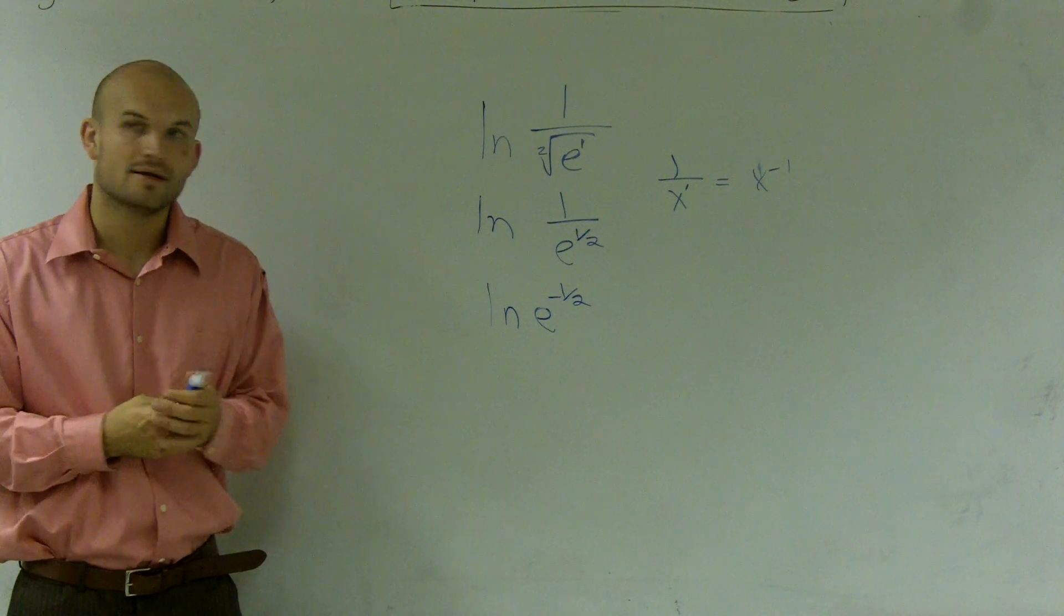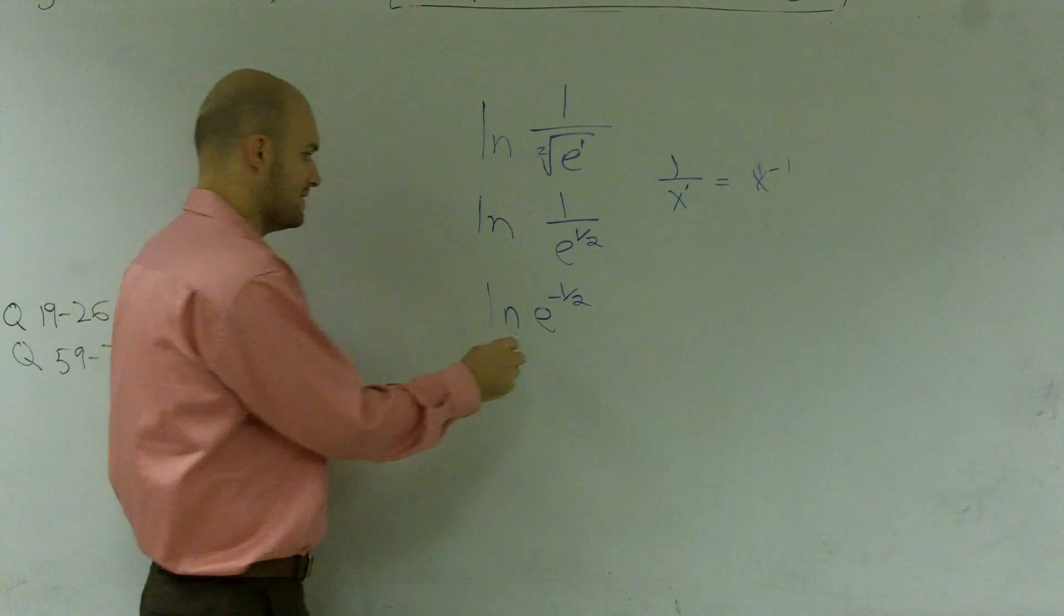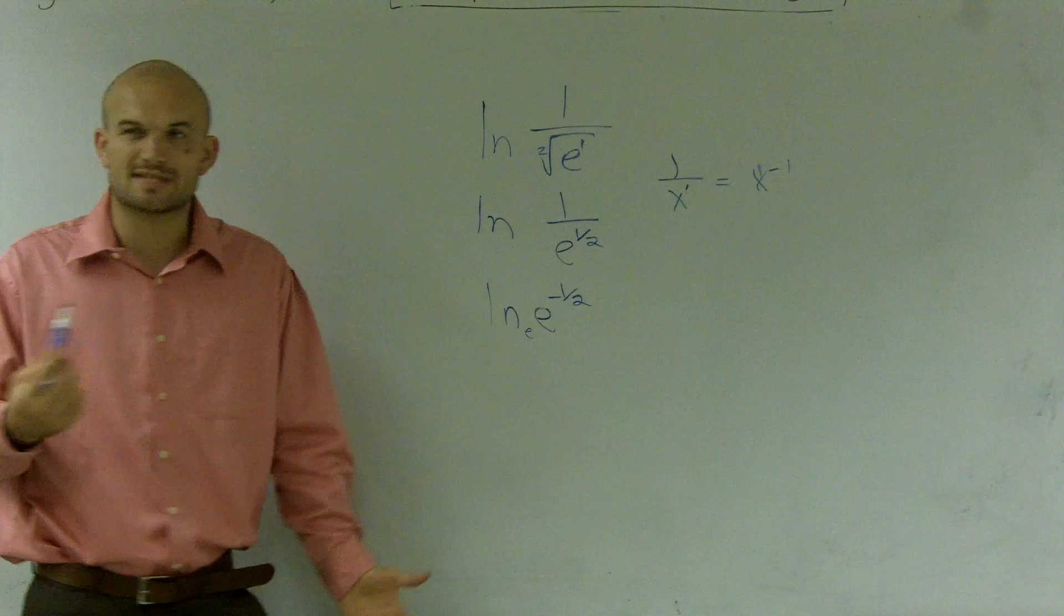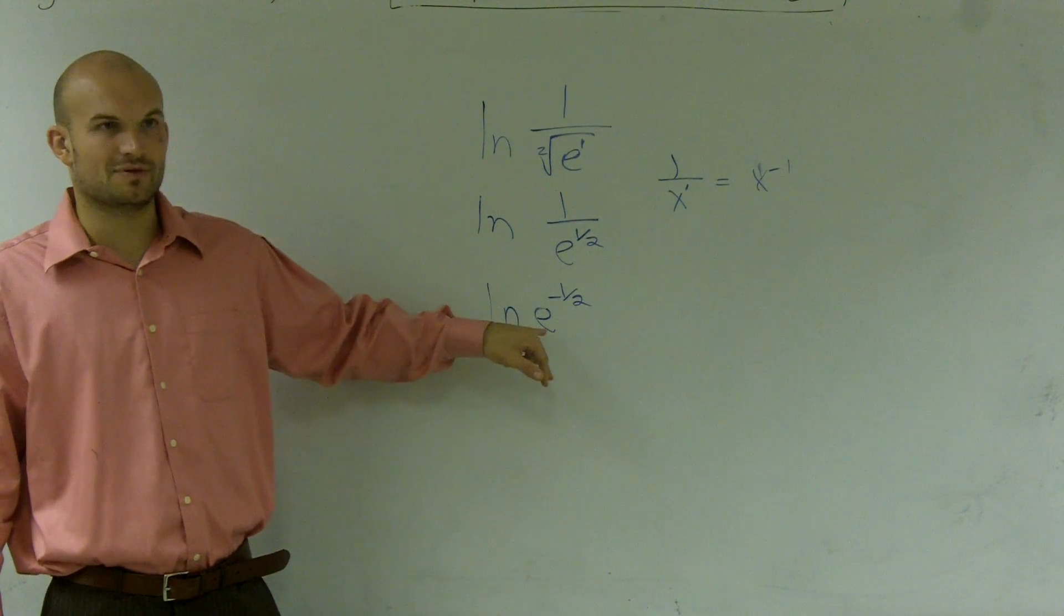Now, the thing you guys need to remember is when dealing with natural logarithms, this is already to a base e. We don't write it in there because that's the only time we use natural logarithms, is when it's to the base e. So e raised to what number gives you e?